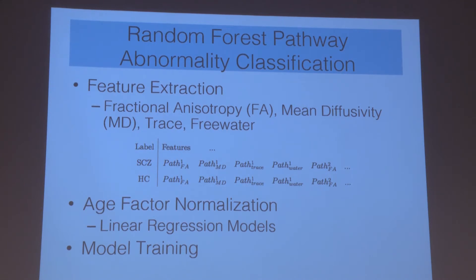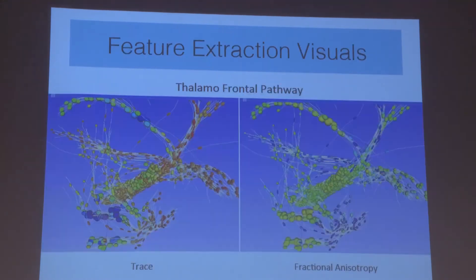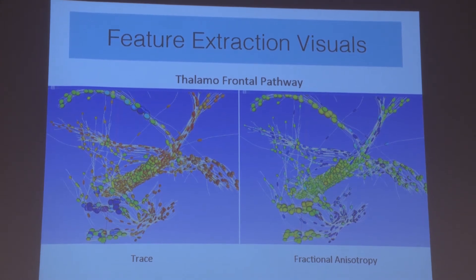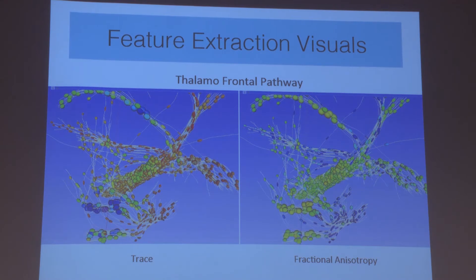We then performed age factor normalization to regress out age information and focus on abnormalities present. We then trained a model to predict between early schizophrenia and healthy controls. The feature extraction visualization can be seen where the trace ellipsoids for the thalamofrontal pathway are colorized differently from the fractional anisotropy shown to the right.